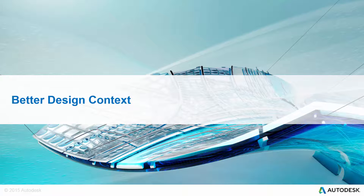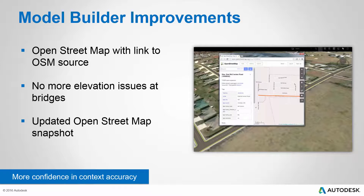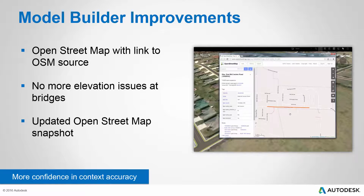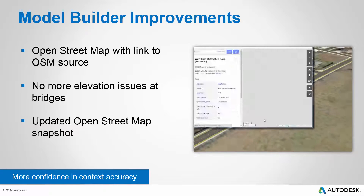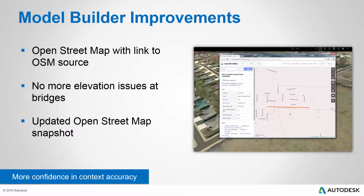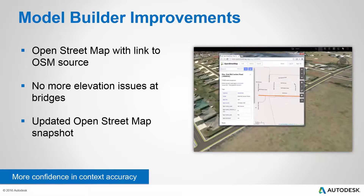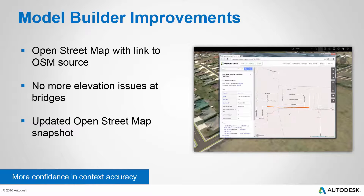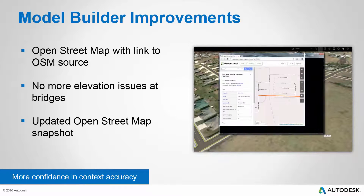Another area of improvement in this latest release is the ability to create better design context. When you open a model created with Model Builder and hover over one of the road features, the tooltip will include a link to the OpenStreetMaps source data, giving you additional information about the data, where it came from, and when it was last updated. You'll also find better results around bridges, and the results from Model Builder are more current and more representative of what's out there in the field. We've recently updated our snapshot of the OpenStreetMap data, so we're feeding a newer version into the Model Builder service, giving you more confidence in the accuracy of the data.